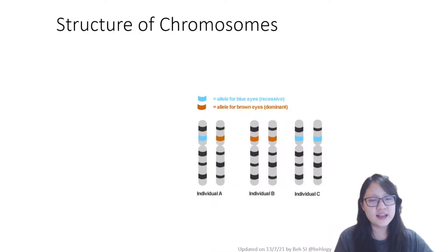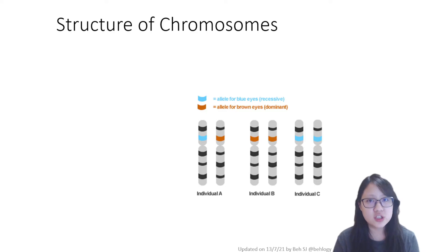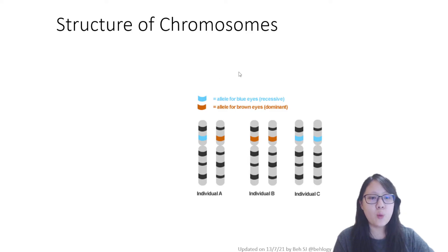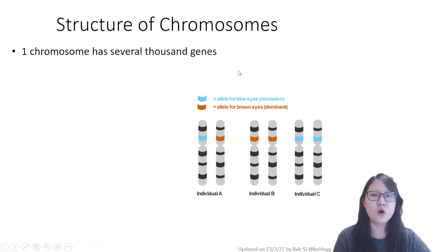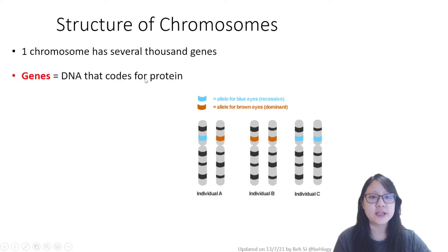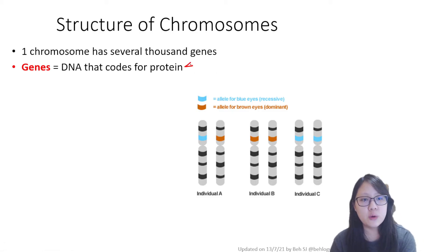Now you know how DNA is related to a chromosome. DNA is mostly a general term referring to a double helix structure, whereas a chromosome is tightly wound DNA associated with histones. Every single chromosome is a length of DNA that's tightly coiled and it codes for several thousand genes. One chromosome is quite a long piece of condensed DNA and can contain a lot of information. Each gene is DNA that codes for protein — this is the definition of gene.